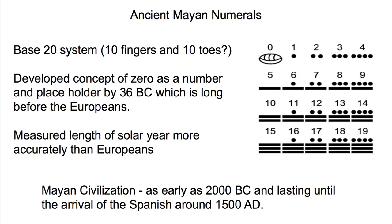The ancient Mayan numerals were a base 20 number system, which is very different than ours. Why was it base 20? Nobody knows, but it's easy to imagine perhaps because we can count 10 fingers and 10 toes, and that's where a base 20 system of counting might have developed. The Mayans developed the concept of zero as a number and a placeholder by 36 BC on our calendar, which is long before the Europeans had done so. So they were really advanced in their mathematics compared to Europe at that time. The Mayans had also measured the length of the solar year much more accurately than the Europeans had at that time.